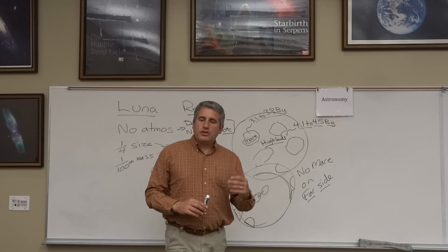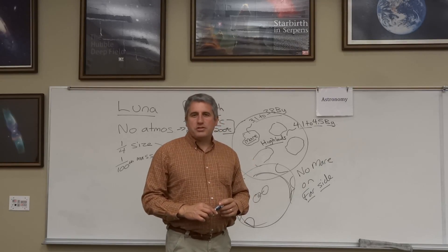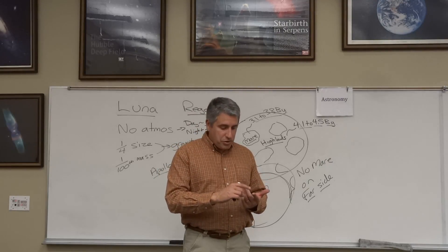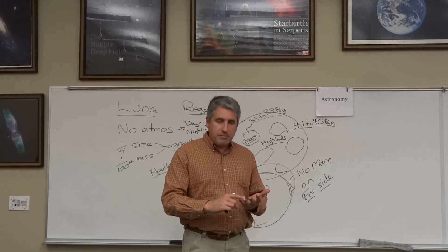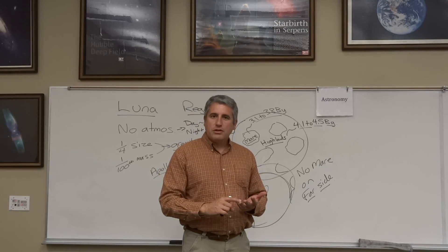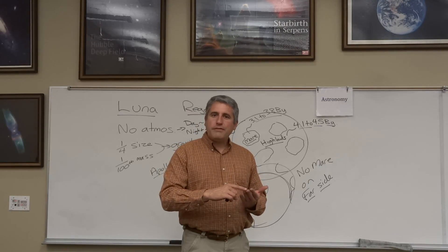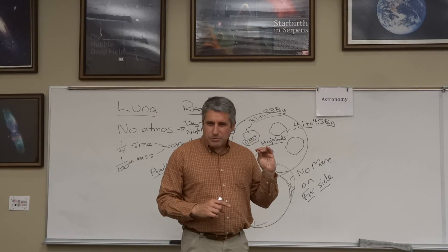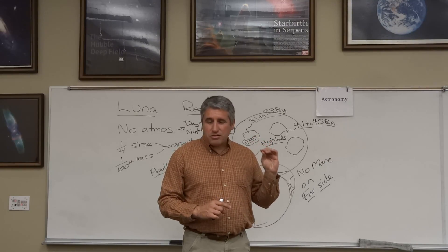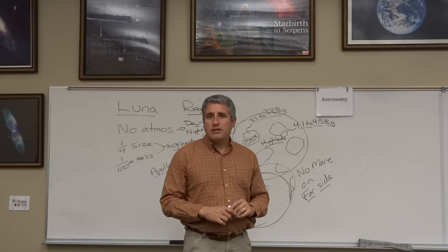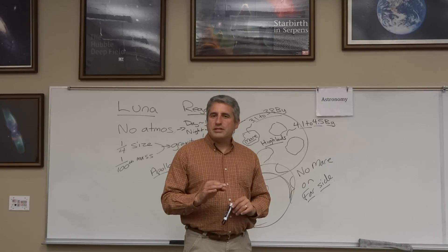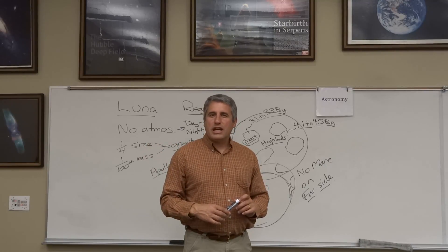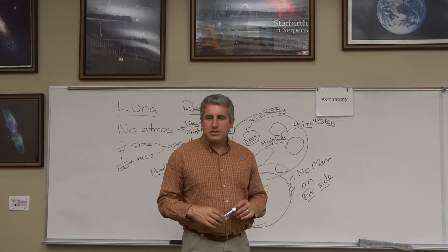In our tour of the solar system, we'll next talk briefly about the planets Mercury, Venus, and Mars — small terrestrial objects close to the sun. Then our tour will bring us to the outer solar system: Jupiter, Saturn, Uranus, and Neptune.